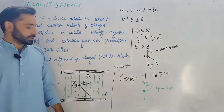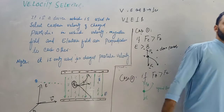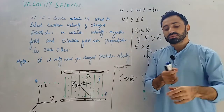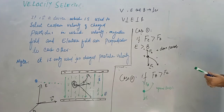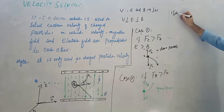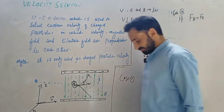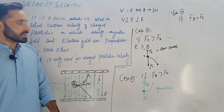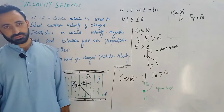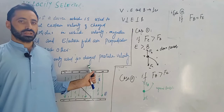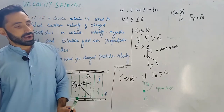Now let us move to case number 3: the electric force is equal to the magnetic force. In this case, the net force is zero, and the particle passes straight through undeflected. The particles move with constant velocity in a straight line.